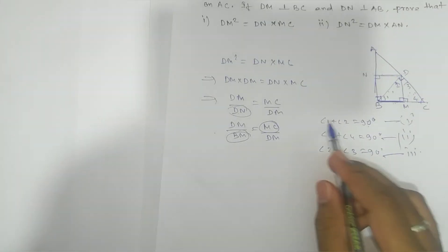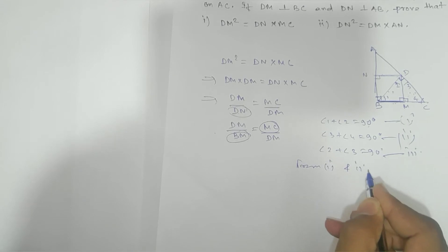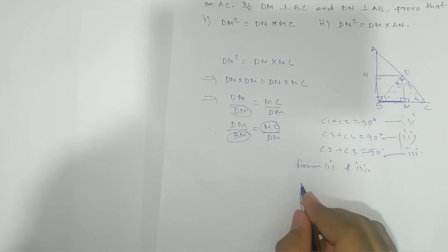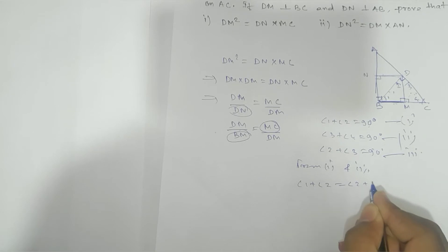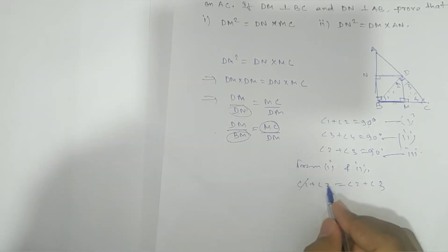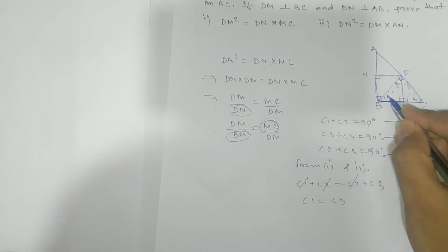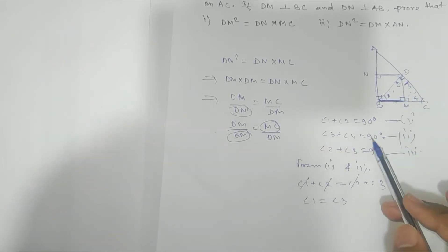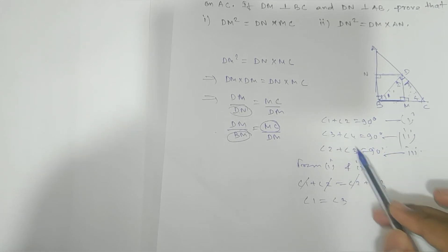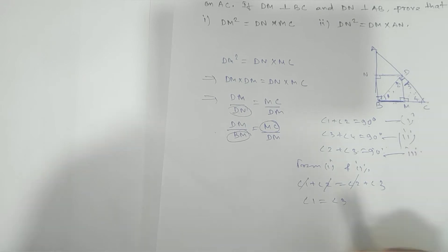From equations 1 and 3: angle 1 + angle 2 = angle 2 + angle 3, so angle 2 cancels and we get angle 1 = angle 3. Similarly, from equations 2 and 3: angle 2 + angle 3 = angle 3 + angle 4, so angle 3 cancels and we get angle 2 = angle 4.